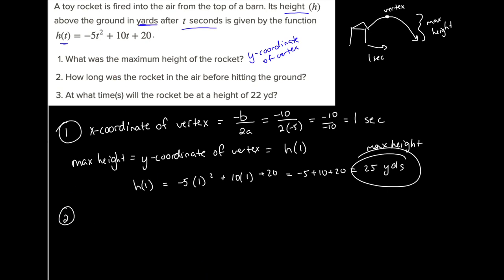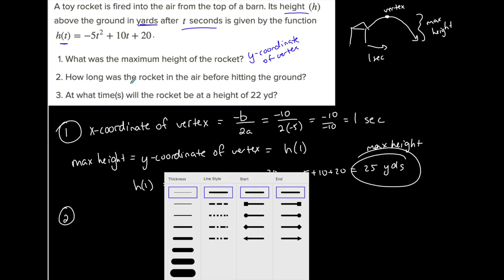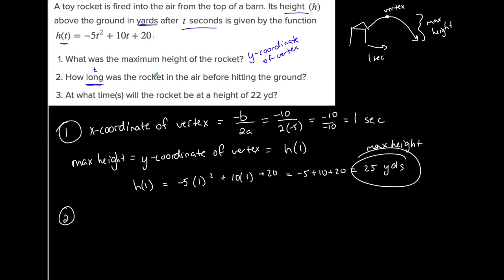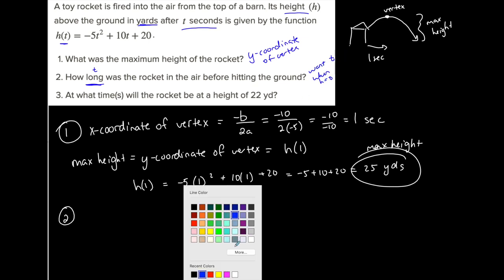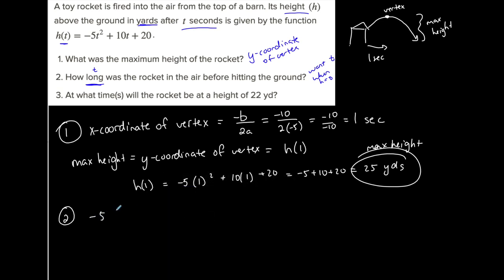For the second question: how long was the rocket in the air before hitting the ground? If I want how long, I'm looking for t. So I want t when the height is equal to zero, because H represents the height above the ground, and if I'm on the ground the height is 0. We want to find the time t when H is 0. So negative 5t squared plus 10t plus 20 equals 0 — and there we go, a quadratic equation to solve.